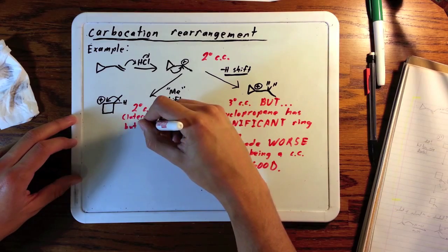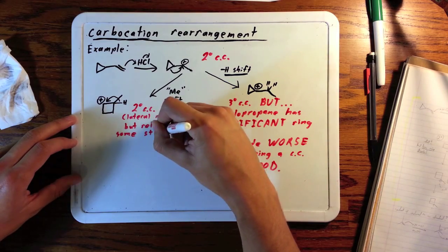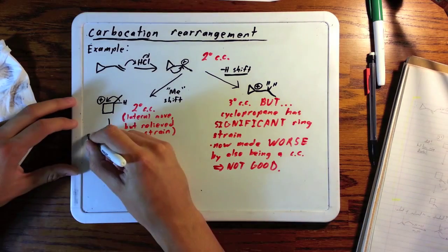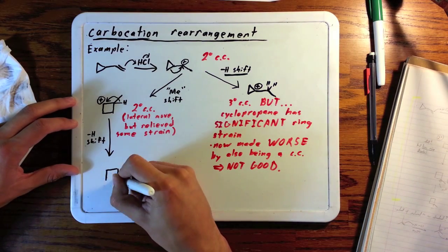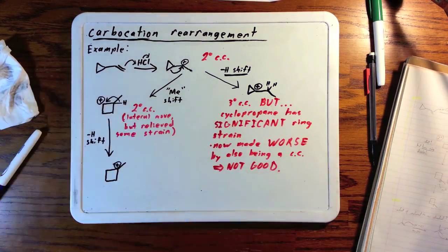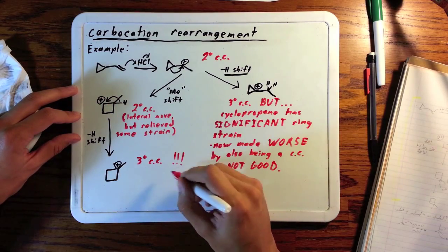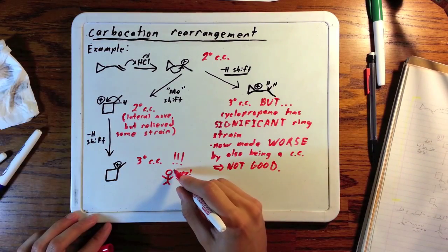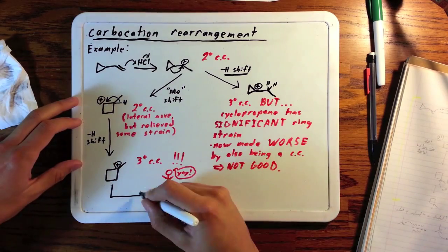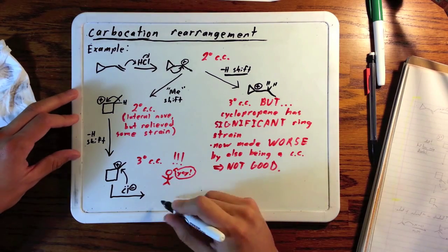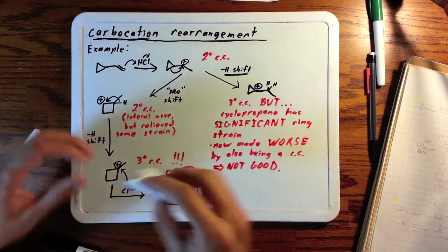It's a bit of a lateral move from a secondary to secondary, but we've reduced ring strain - this is more stable, it will happen. If we follow this up with the hydride shift, now we have a tertiary carbocation - yay, that was our goal, it always is. Finally, chloride comes in, creates a new bond.